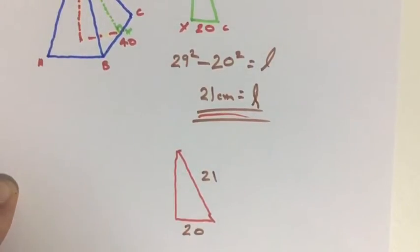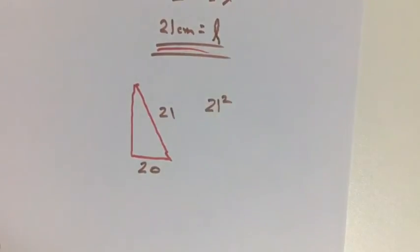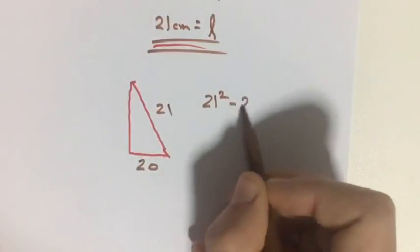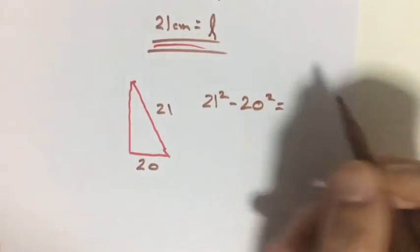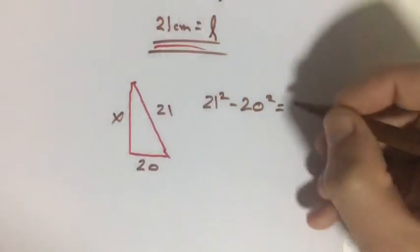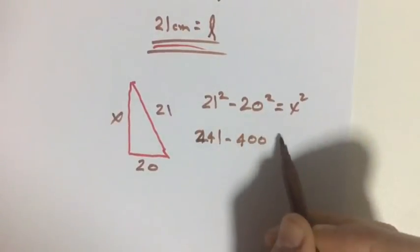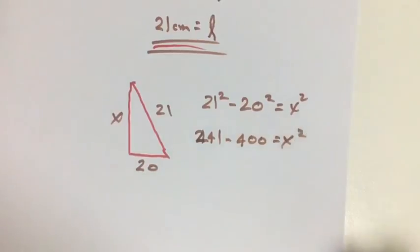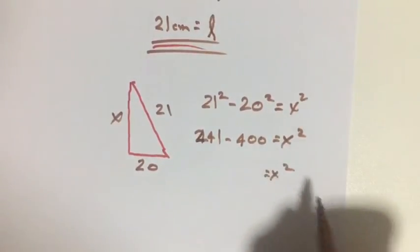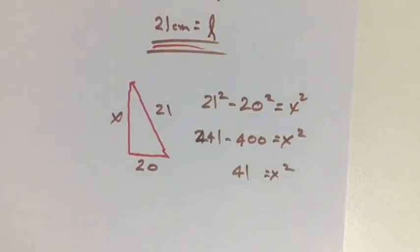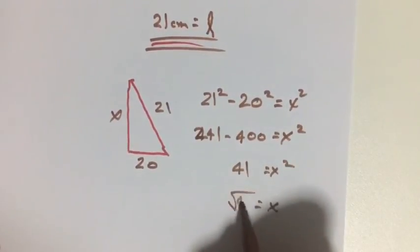So if we use Pythagorean theorem again, 21 squared minus 20 squared equals our height squared. 441 minus 400 equals x squared. x squared equals 41. So x is going to be the square root of 41.